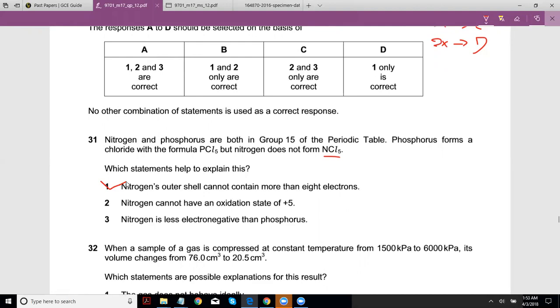Nitrogen cannot have an oxidation state of plus 5 - it's wrong because it can have an oxidation state of plus 5, like in nitric acid HNO3. Here minus six, here plus one, plus five. So it can have an oxidation state of plus five. So only two is wrong, which means it's D, which is only one correct in this case.